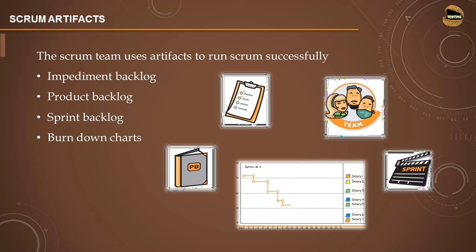All challenges are listed in the impediment backlog — for example, if a person was on leave during a sprint and a feature could not be completed or tested. The product backlog is the broken-down form of a user story into simpler task forms, representing the smallest unit to be developed in a sprint. The sprint backlog is sprint-specific, containing only those tasks from the product backlog which will be completed during a particular sprint.